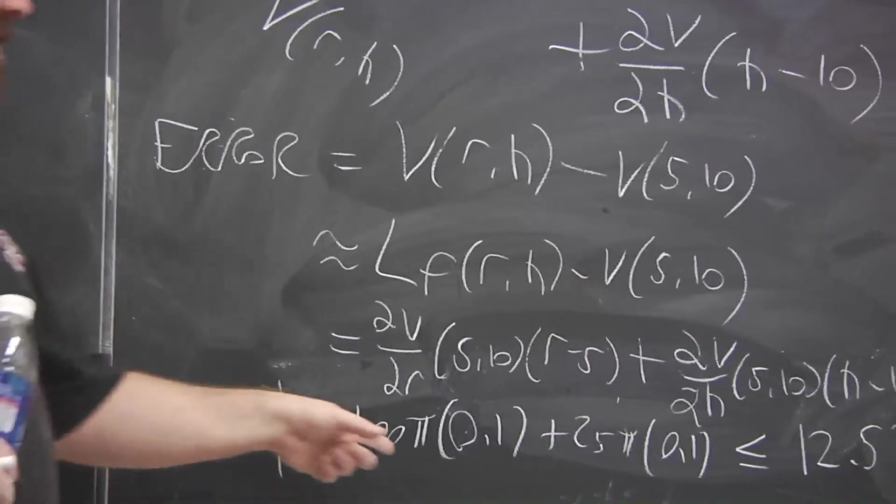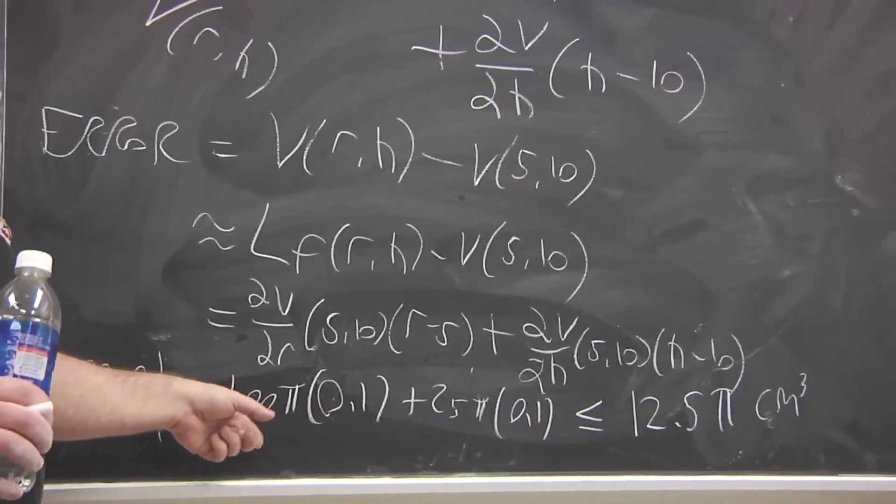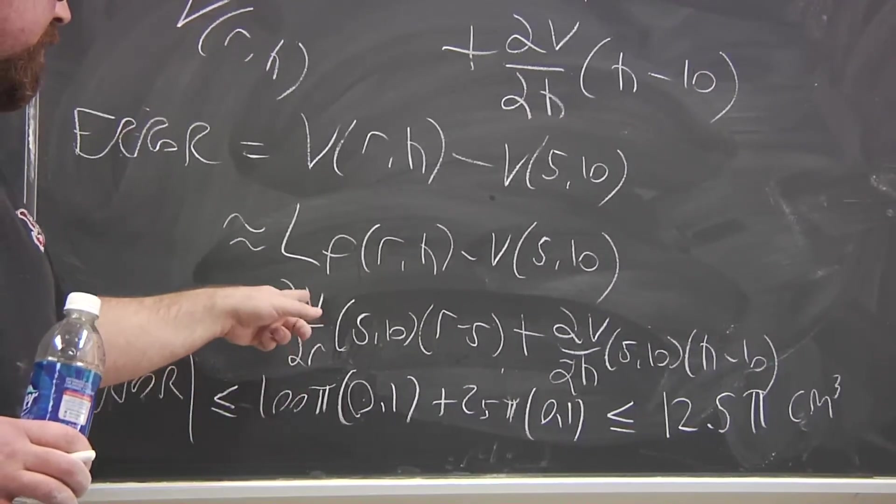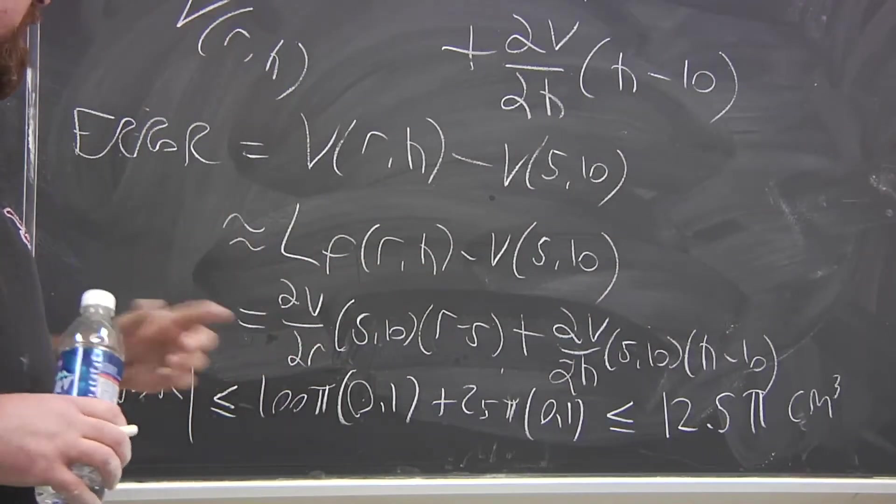Now we do want to make this as large as possible. Otherwise, we won't even be in the ballpark. Because what if you have a situation where one of these partial derivatives is negative? You got to take that into account.